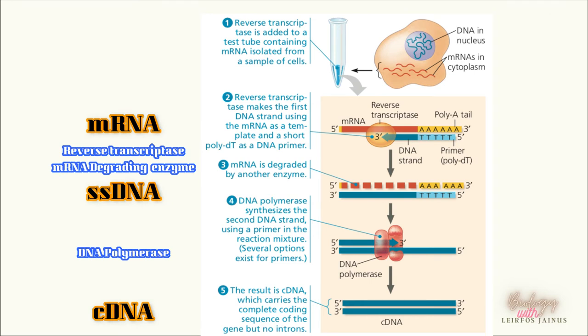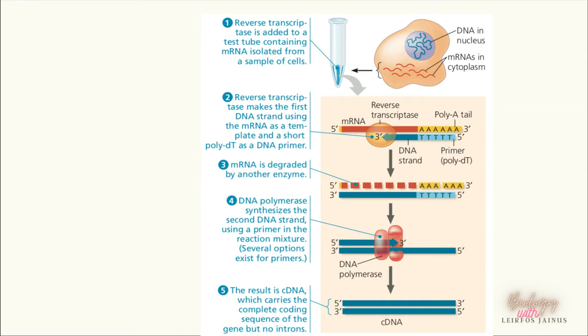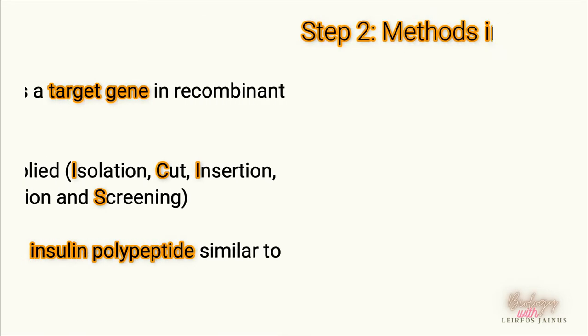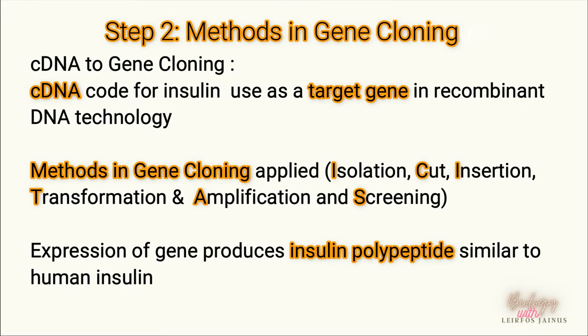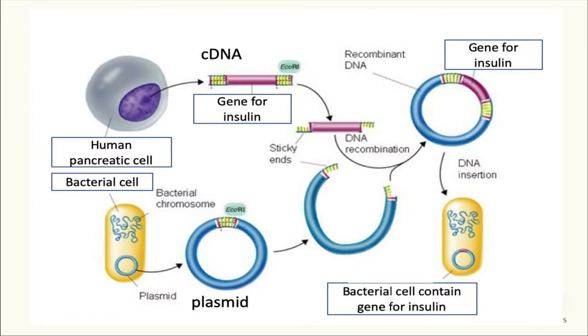The next step is to incorporate the cDNA into a cloning vector. The cDNA that will become our target gene will be combined or incorporated into the plasmid through the methods of gene cloning, which involves isolation, cut, insertion, transformation, amplification, and screening. The expression of the target gene will produce an insulin polypeptide similar to human insulin.